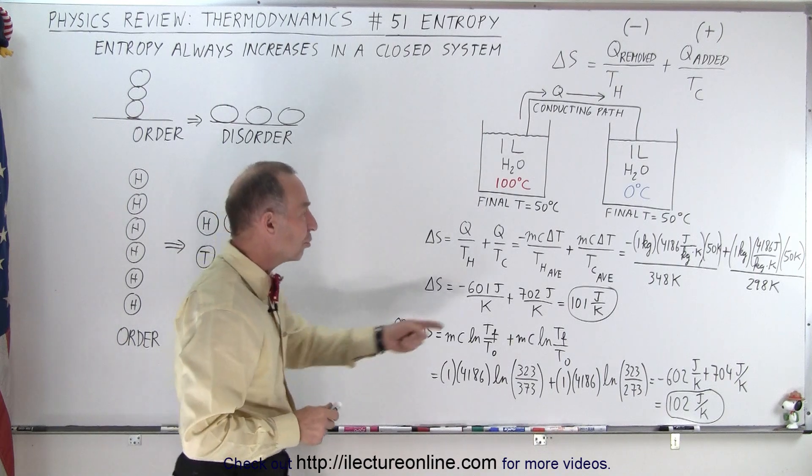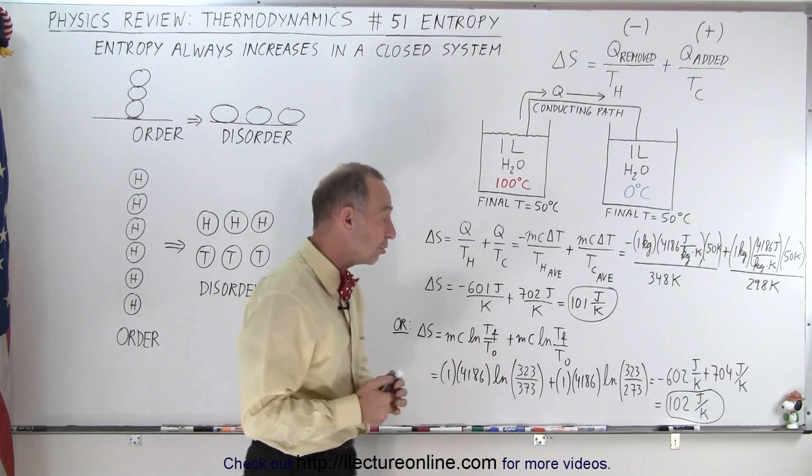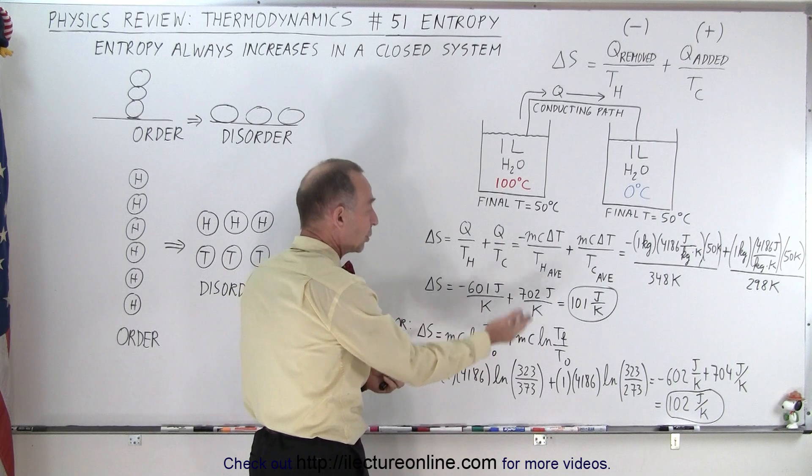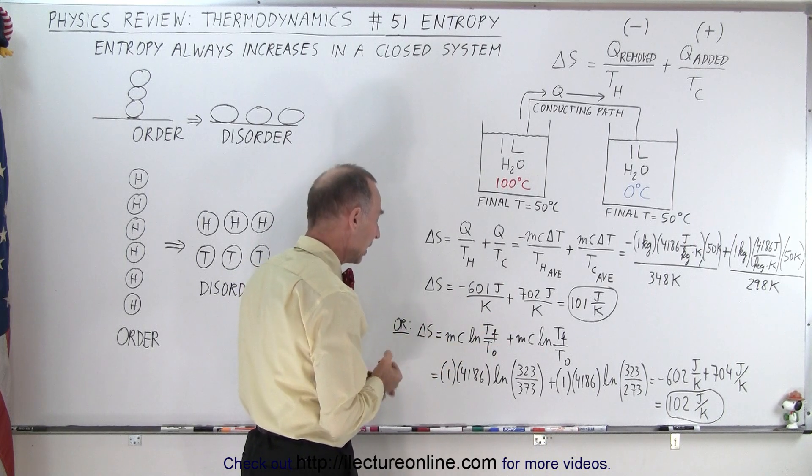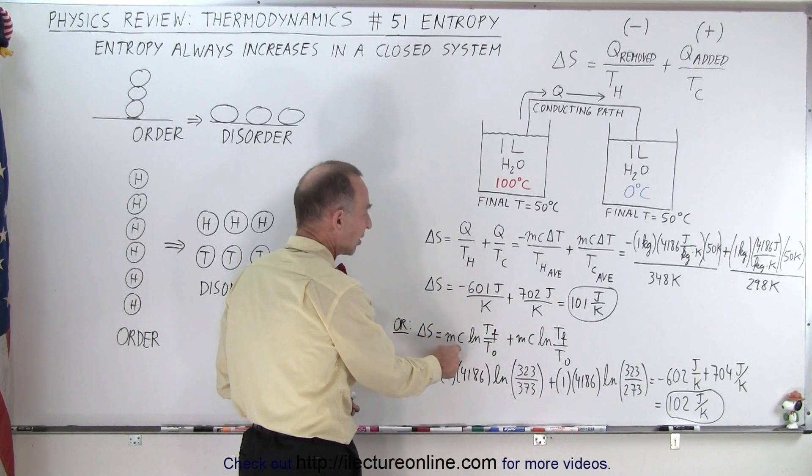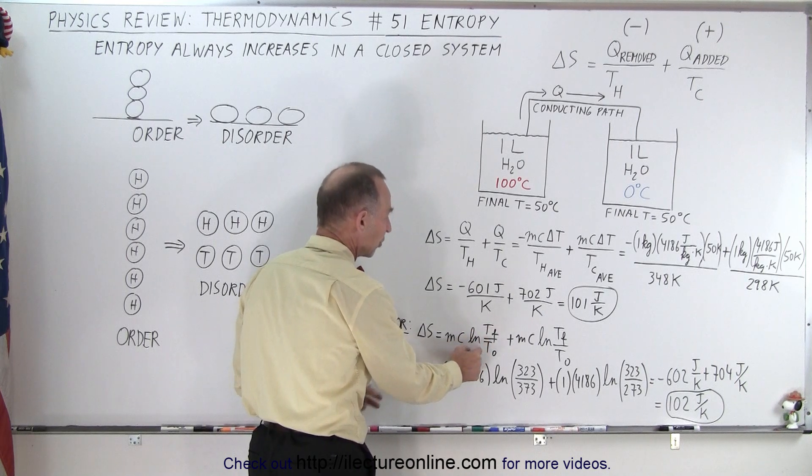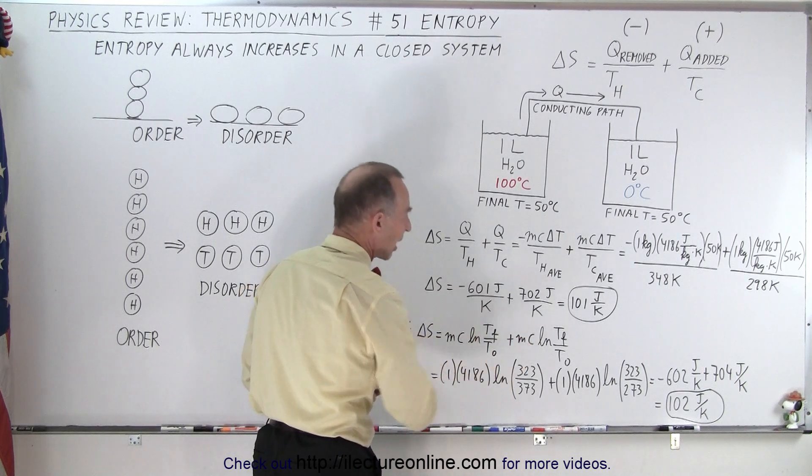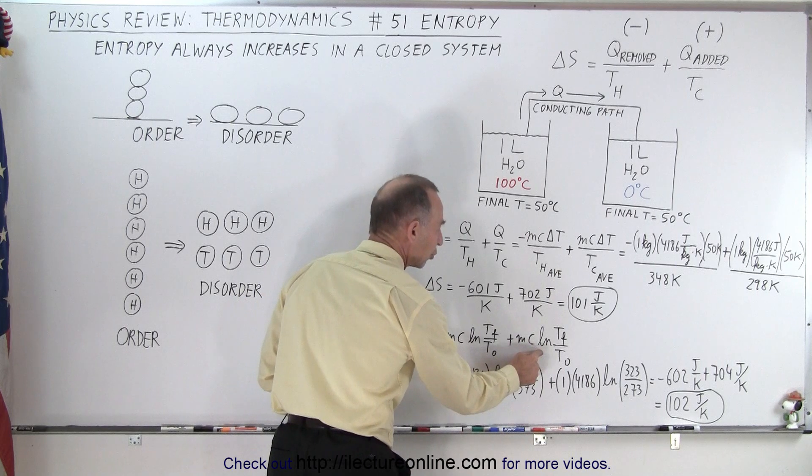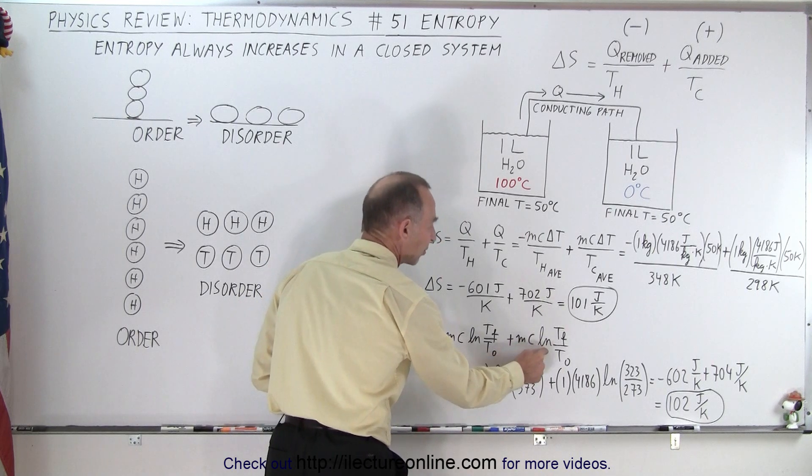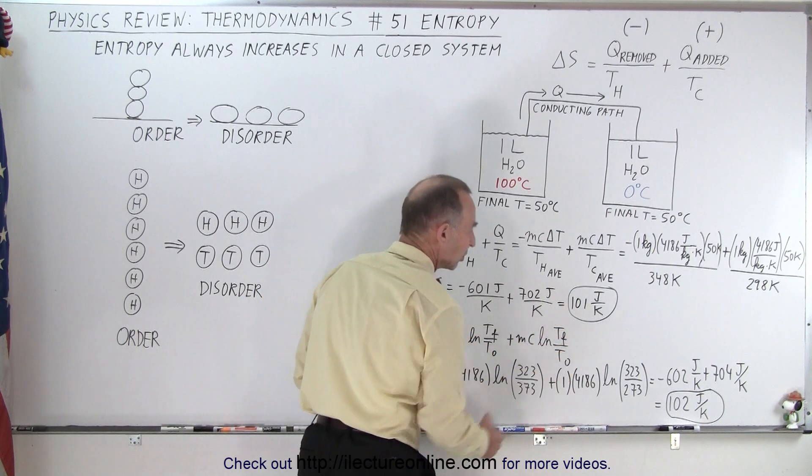Now we can usually use the average temperature or we can use this equation which is derived when we do the integral of the situation. So we can say that delta S is MC times the natural log of the final temperature over the initial temperature for where we remove the heat from the hot, and then we add that heat to the cold where it's MC times the natural log of T final over T initial.